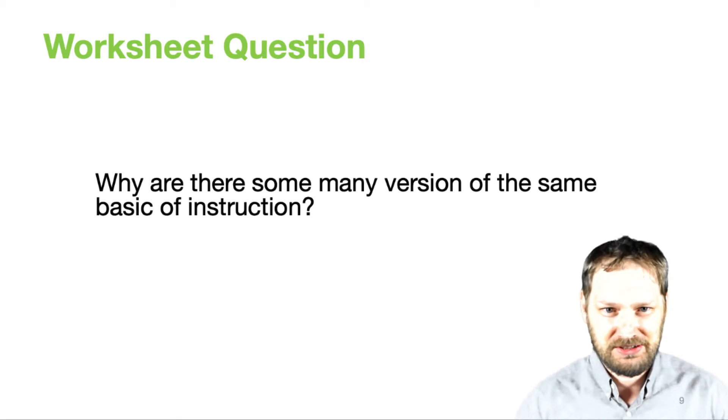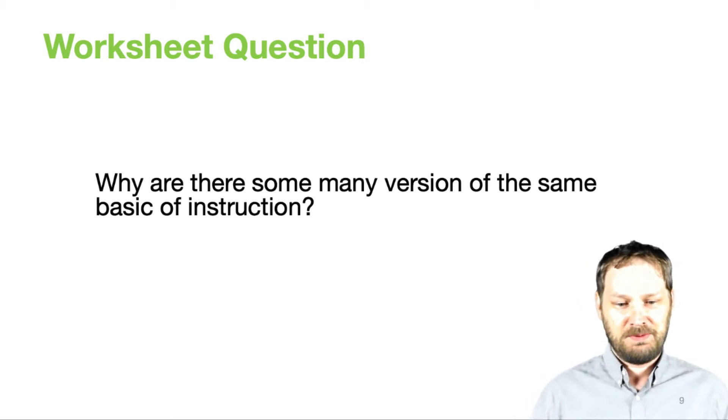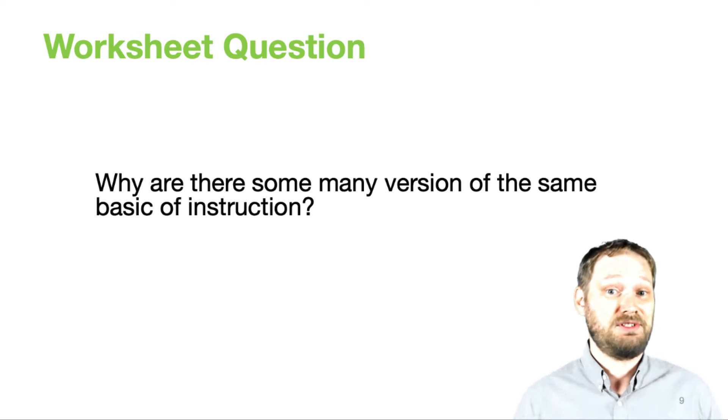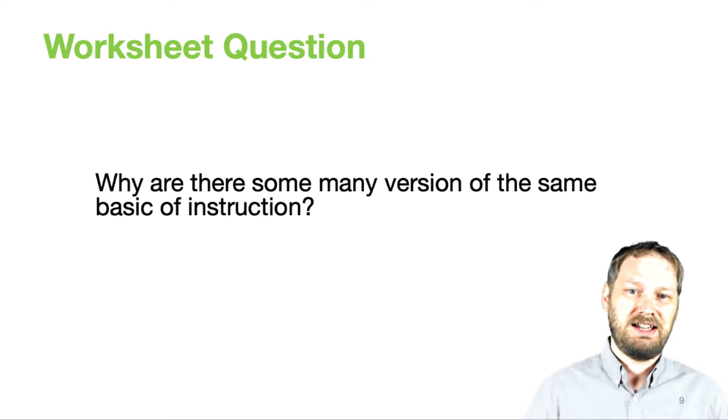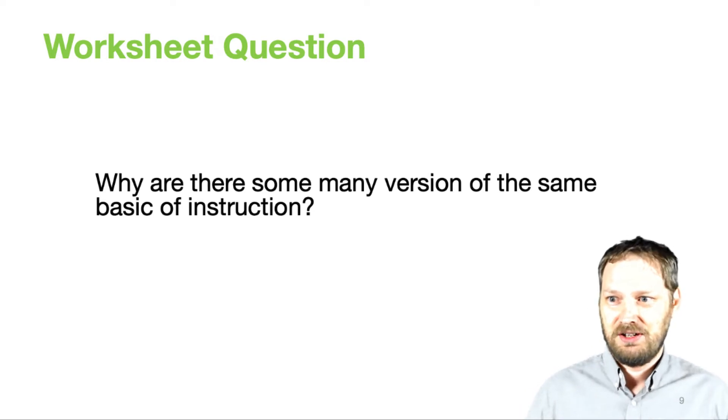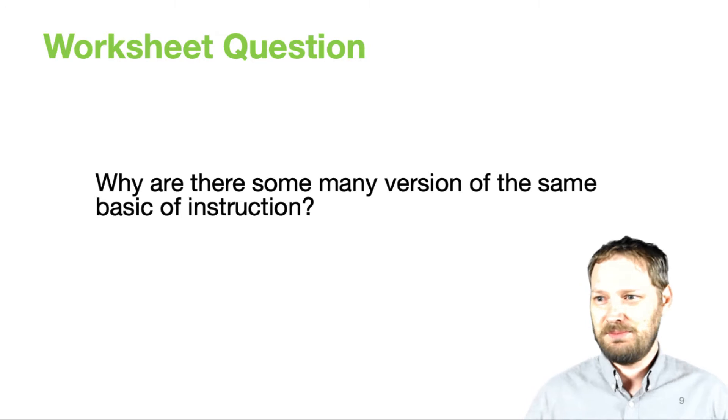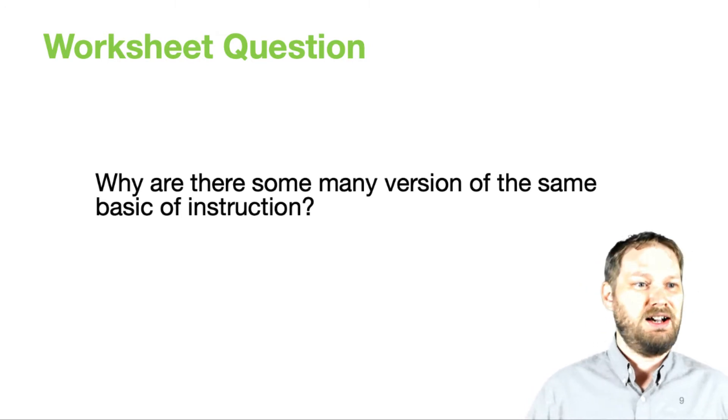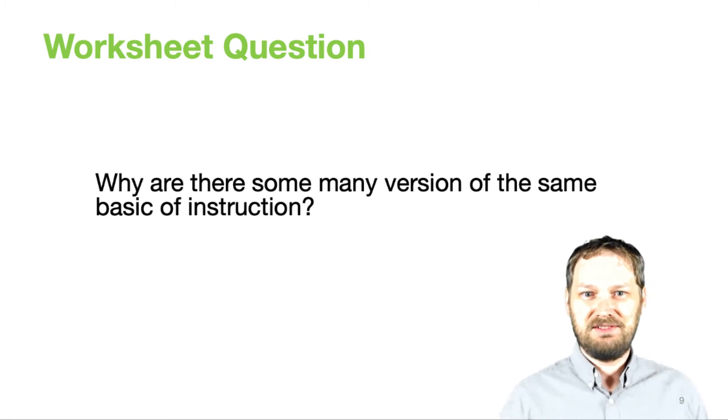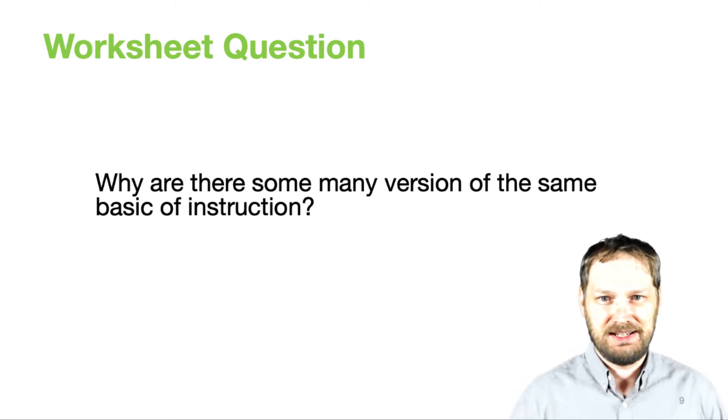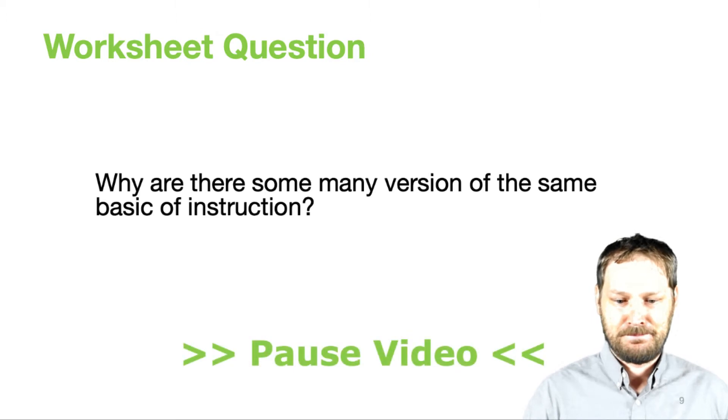So we'll make this a worksheet question for you. Go to Gradescope, open it up and answer the question. Why are there so many versions of the same basic instruction? In fact, it's not just add. There are lots of instructions that have many different encodings. Why would the architects of the ARM Cortex processors want all that overhead? It's a lot more instructions that have to be decoded. What's the big advantage? This is a good time to pause the video. Go fill out that answer and we'll discuss it in the discussion section.